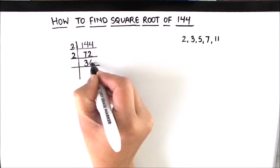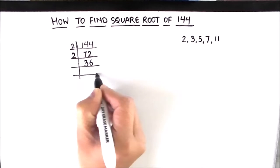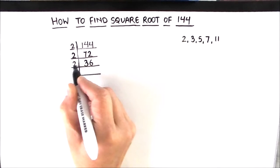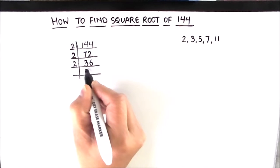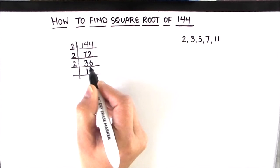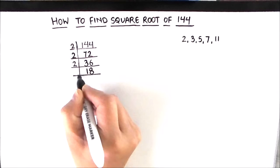Again we are going to use 2. 2 times 1 is 2, 1 is remainder, this becomes 16. 2 times 8 is 16.